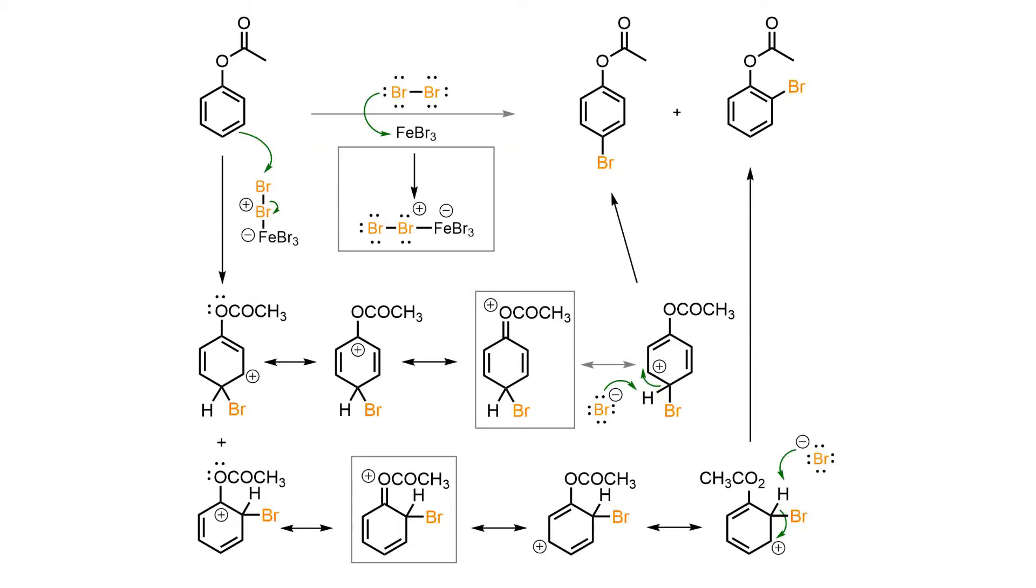When bromine adds to the ortho- and para-positions, the charge is able to spread around the remaining pi system and also onto the phenolic oxygen, as seen here in the highlighted resonance structures.